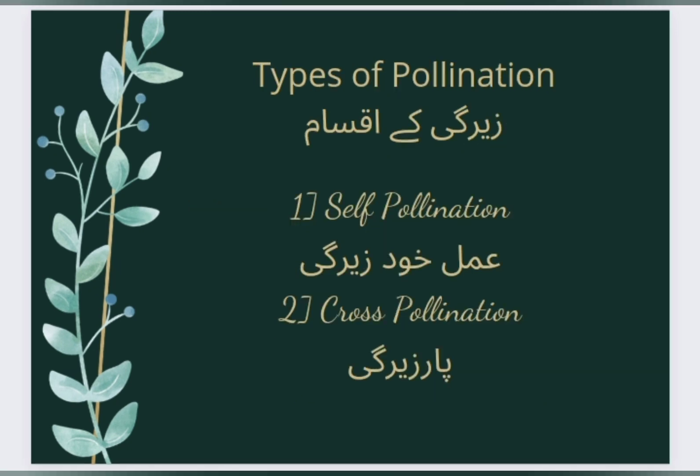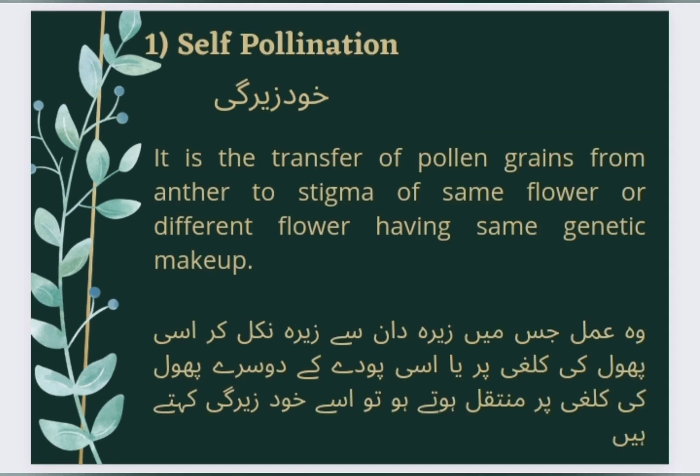Types of Pollination (جیرگی کی اقسام): First, Self-Pollination (عمل خود جیرگی), and Second, Cross-Pollination (پار جیرگی). Now we will look at the types of pollination in detail.